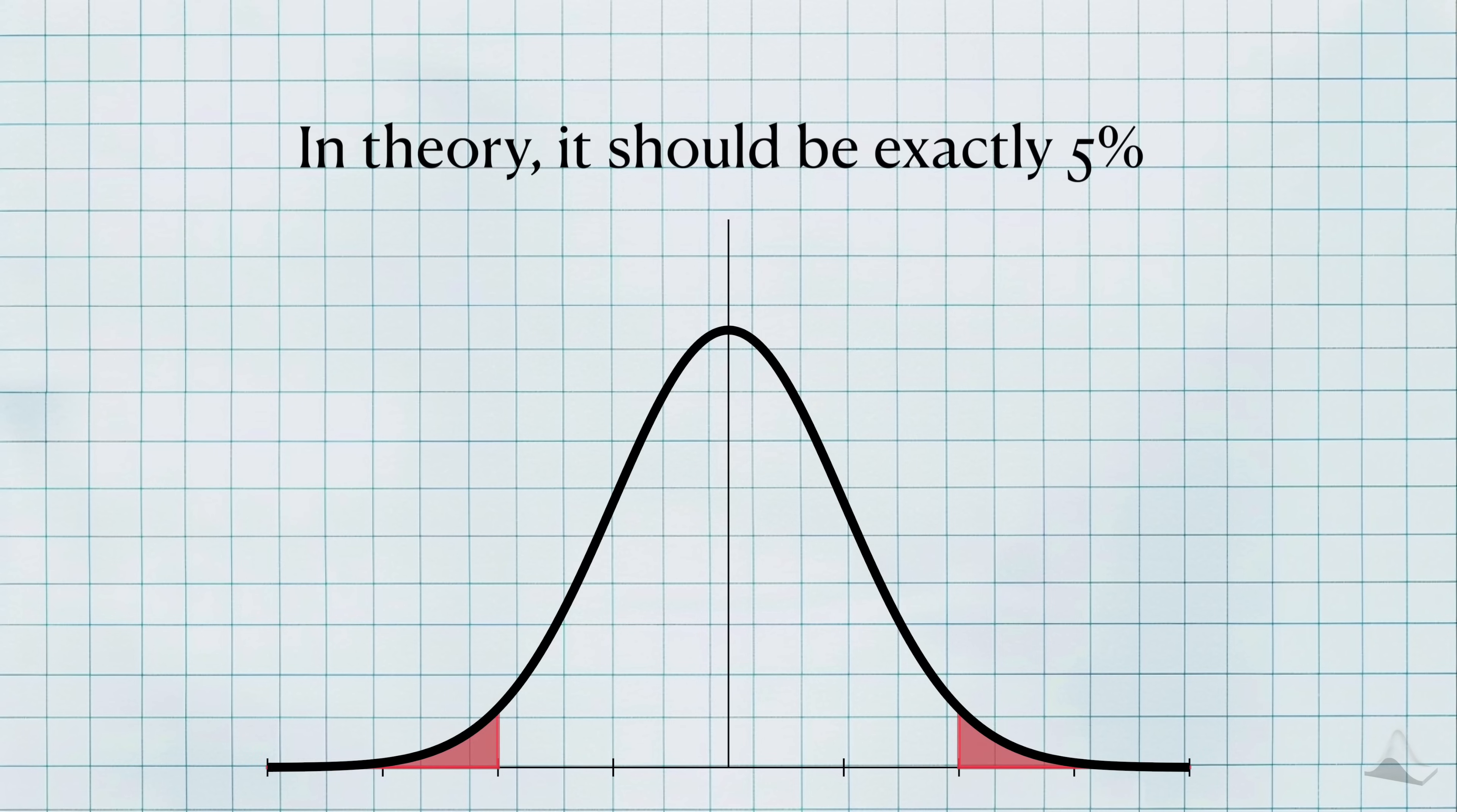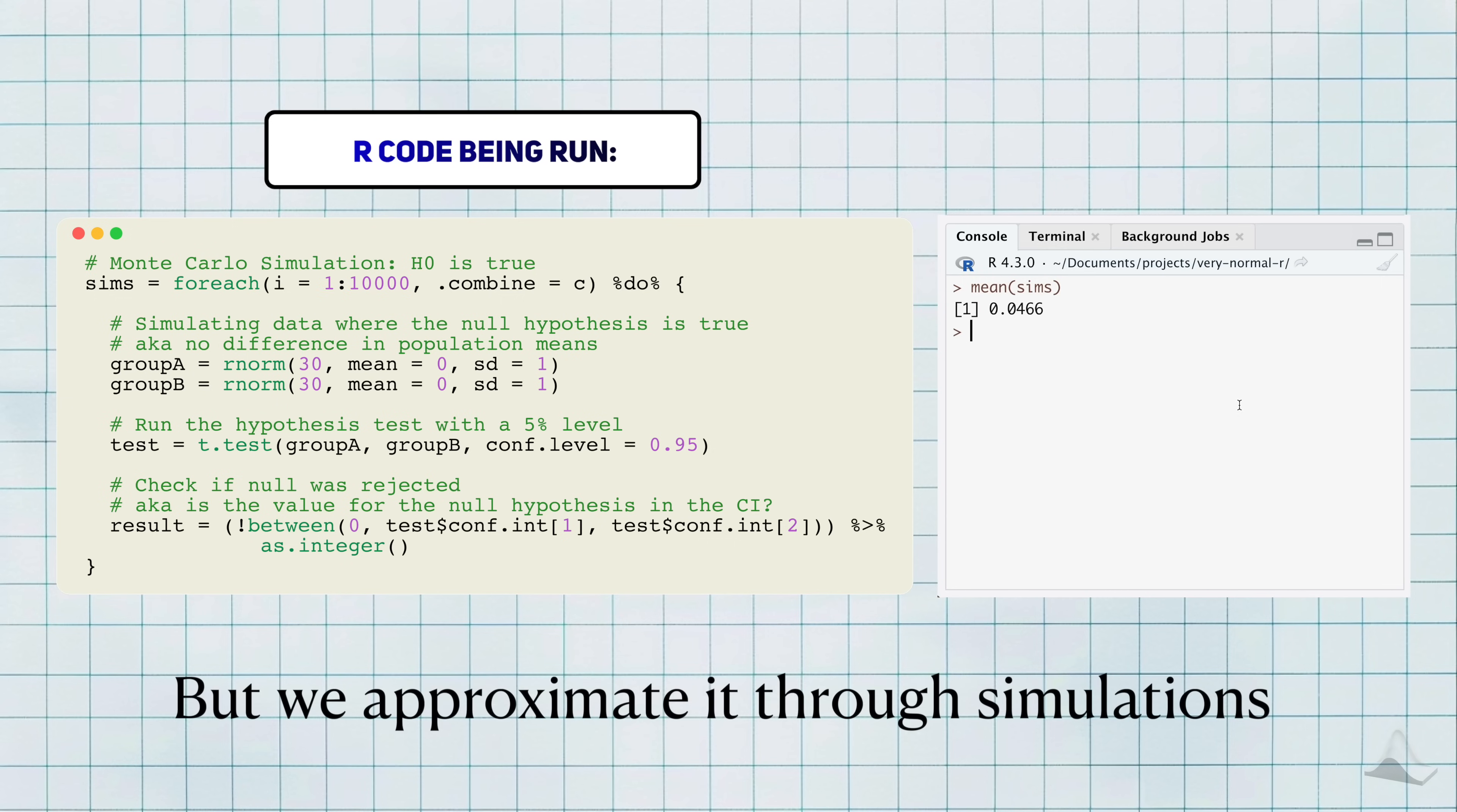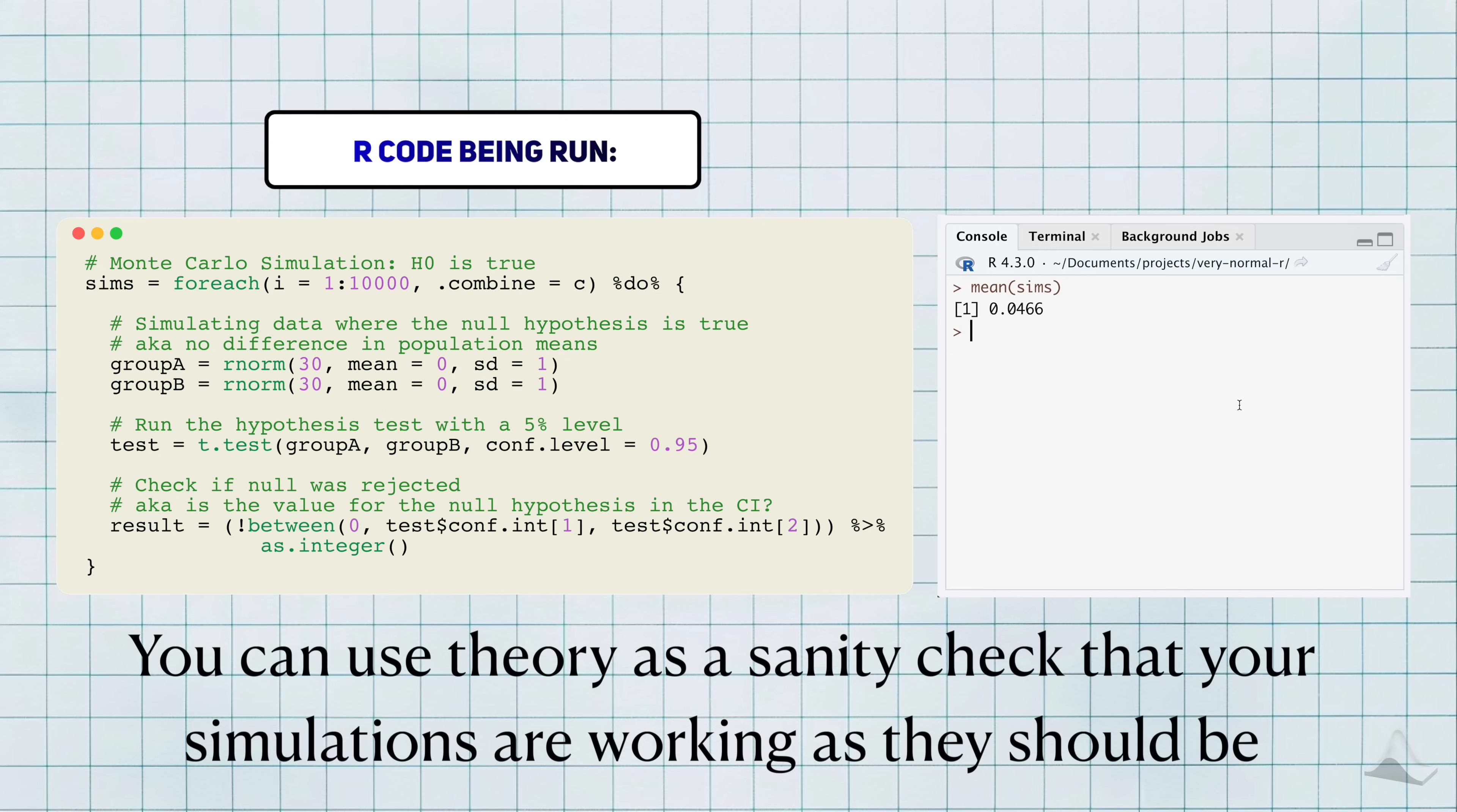In theory, this should be exactly 5% because the critical values are defined by percentiles. Using simulations, we can get a pretty close estimate. I wanted to show you this because you can always compare your simulation results to what you should be seeing in theory.